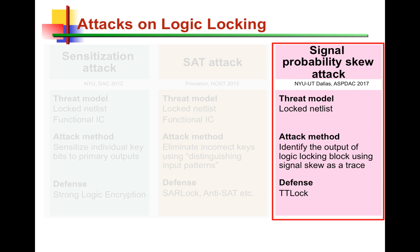In the threat model, the attacker needs only a locked netlist. As opposed to previous attacks where a functional IC is also used as an oracle, in the signal probability skew attack there is no need for an oracle. In that sense, the attack is more powerful because fewer assets are required — we only need the locked netlist, which is traced to identify the anti-SAT block and remove it.